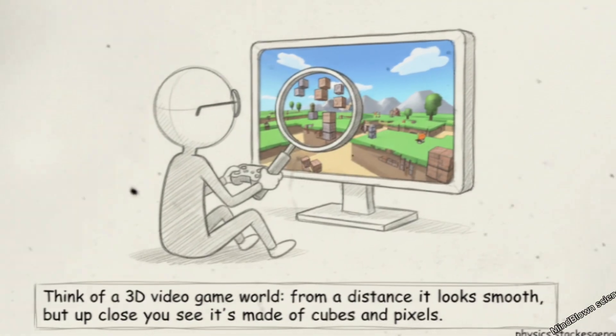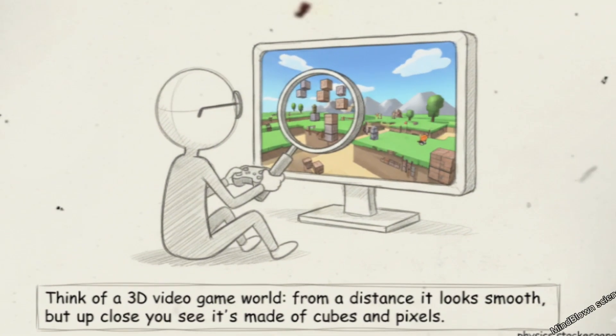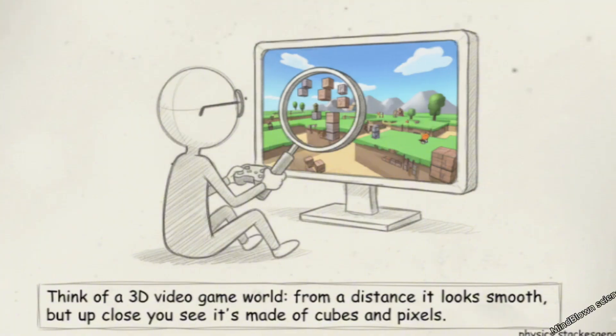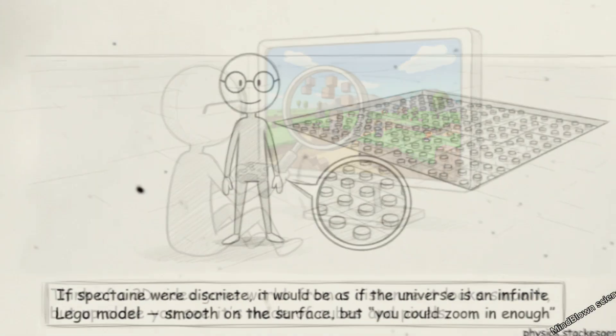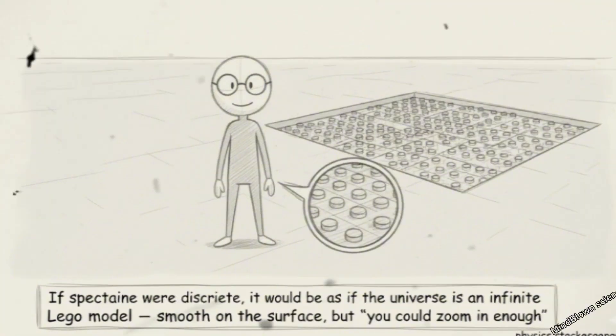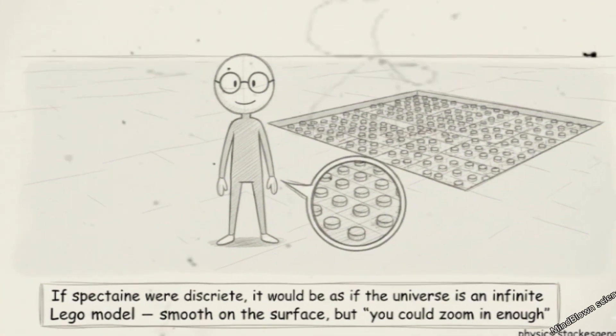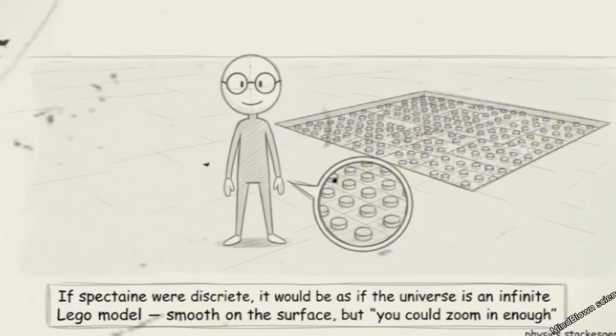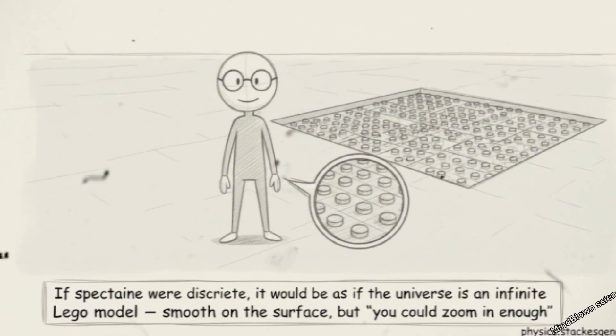Analogy: Think of a 3D video game world. From a distance, it looks smooth, but up close, you see it's made of cubes and pixels. If spacetime were discrete, it would be as if the universe is an infinite Lego model, smooth on the surface, but grainy if you could zoom in enough.